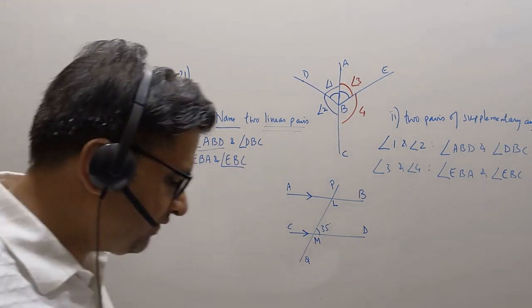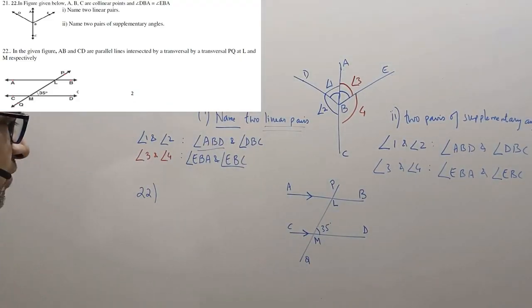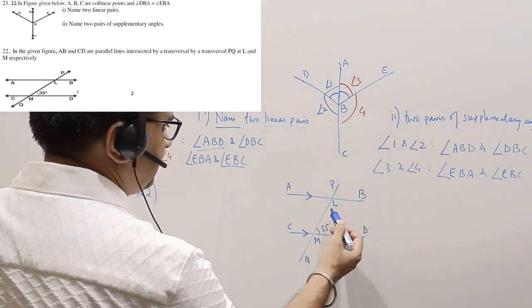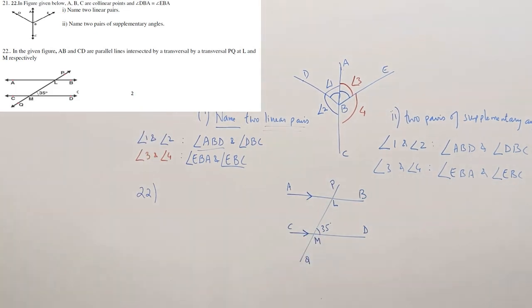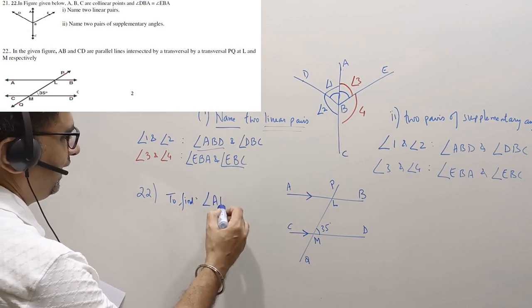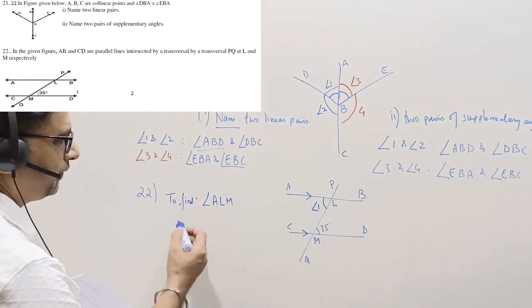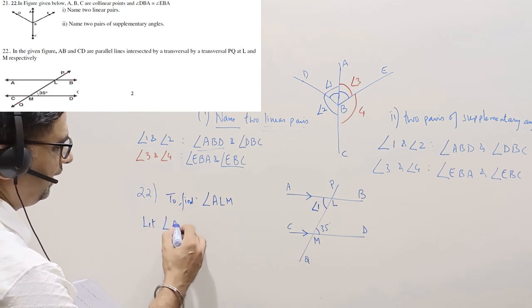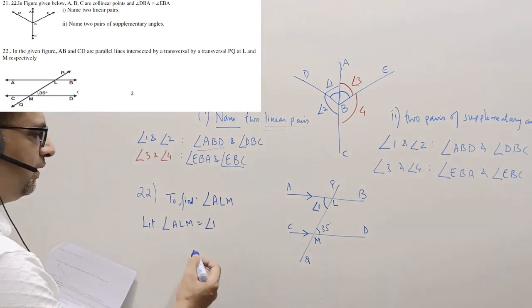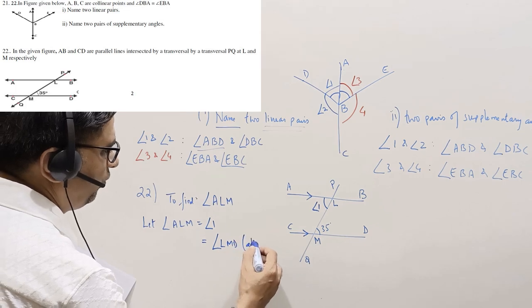Coming to question number 22. We have line AB parallel to CD, and PQ is given as a transversal which cuts these two parallel lines at L and M. This angle is 35 degrees. We are asked to find angle ALM. Let angle ALM be equal to angle 1. This is equal to angle LMD because they form an alternate interior angle pair.